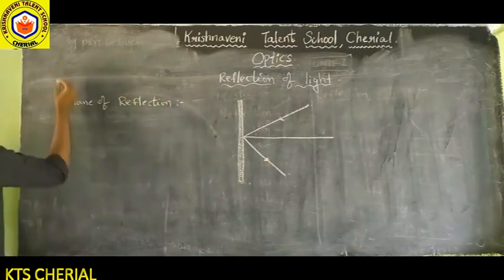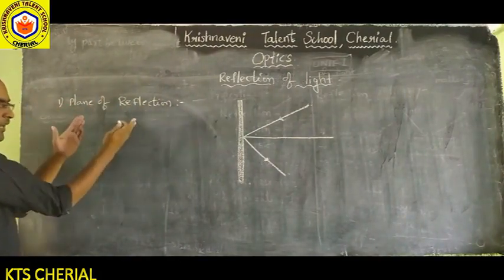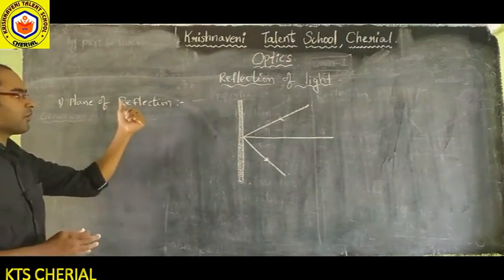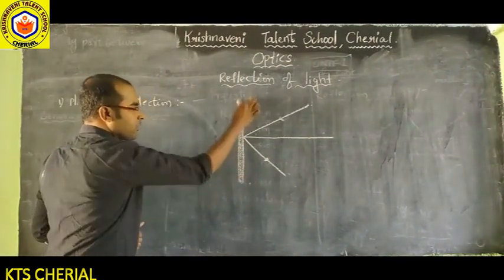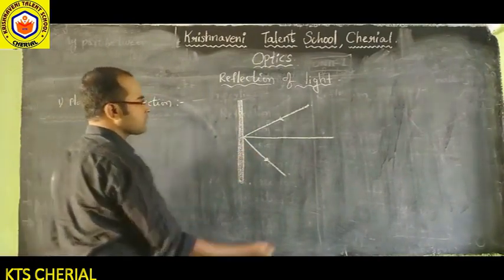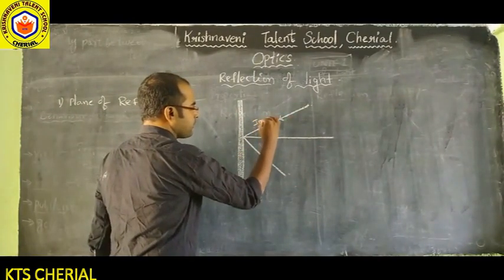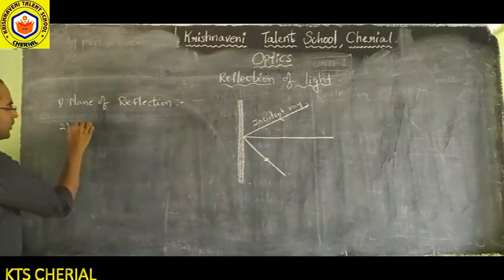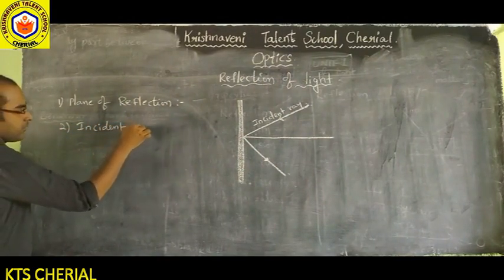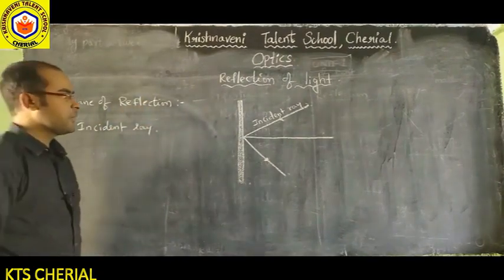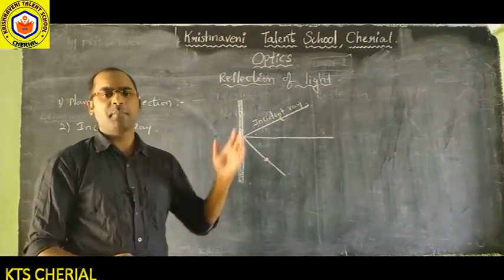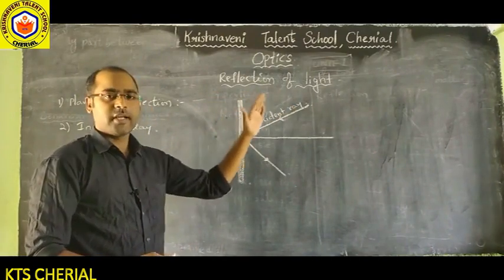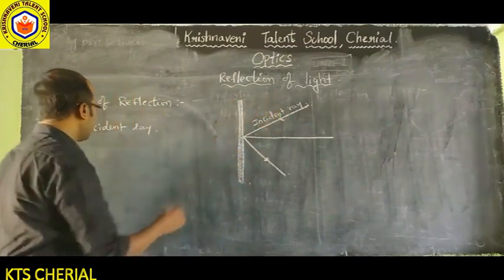The terms involved in reflection of light on plane surfaces: the plane where the reflection process takes place is called the plane of reflection — in this case, a plane mirror. The ray of light falling on the plane of reflection is called the incident ray.